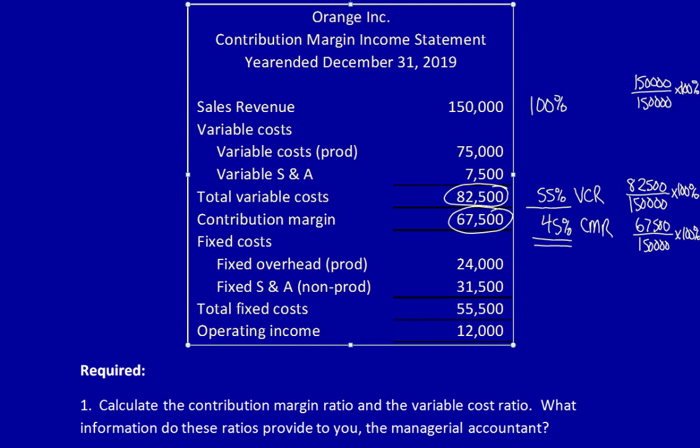The next part of the question says: what information do these ratios provide to you, the managerial accountant? The Contribution Margin Ratio tells you the amount of every sales dollar that is available to cover fixed costs and provide a return to the shareholders in the form of operating income.